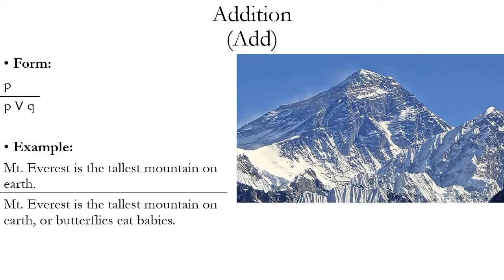Logically speaking, that disjunction is still going to be true. When you say P or Q, you're not guaranteeing that they're both true — you're just saying at least one of them is true. So even if the second disjunct is false, the compound proposition P wedge Q is still going to be true. That's why this rule makes sense logically, and you can use it to introduce new simple propositions — new capital letters — into a proof.